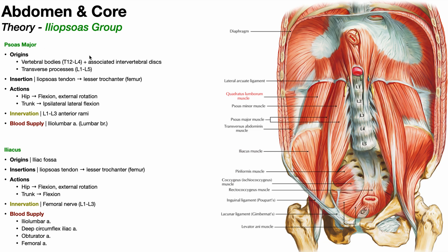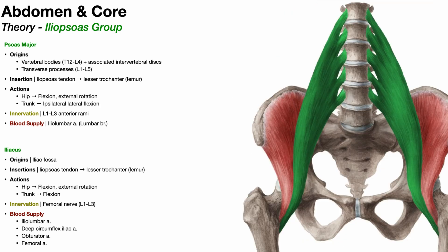The psoas major has origins on the vertebral bodies of T12 through L4 and the associated intervertebral discs. Here in green is psoas major — you can see T12, L1, L2, L3, and L4, with blending of those tendons onto the intervertebral discs in between those vertebral levels. It also has origins on the transverse processes from L1 all the way down through L5. You can actually see the transverse process peeking out; a little bit would attach there as well.